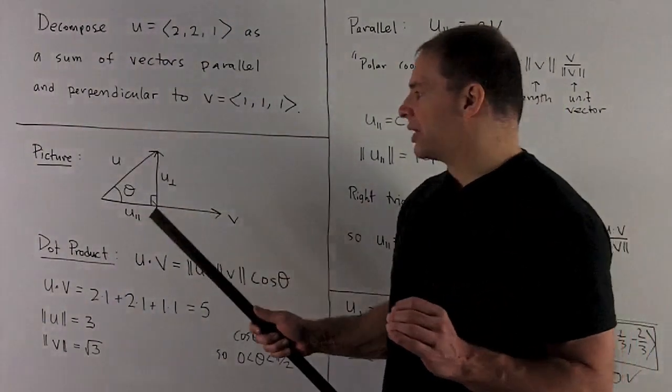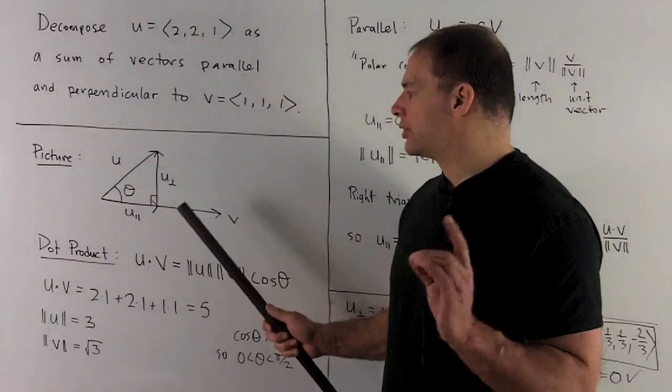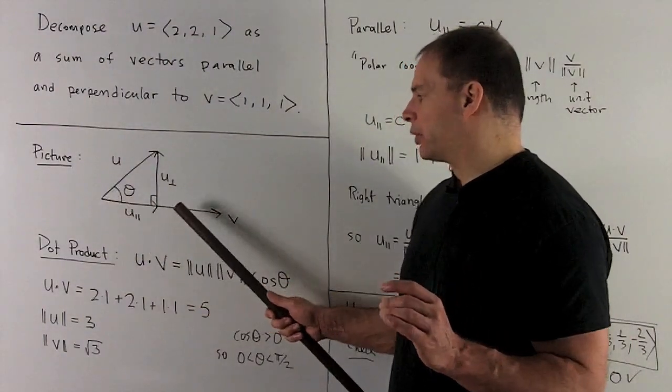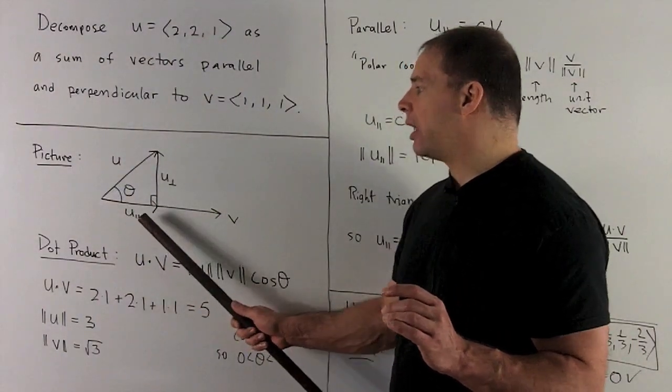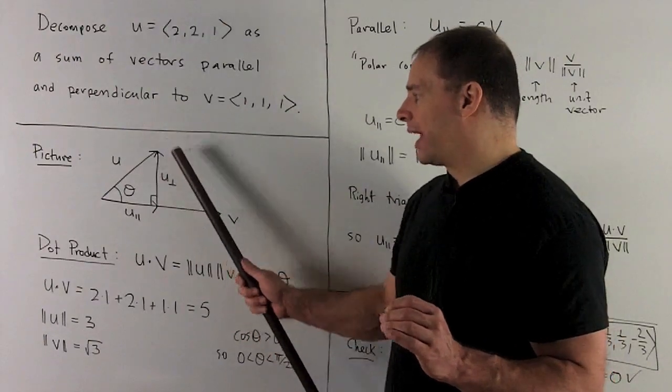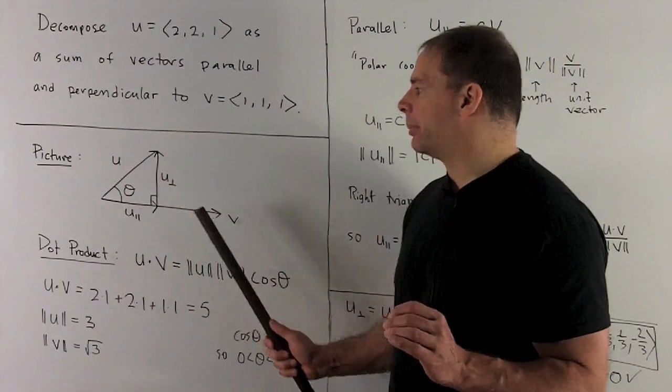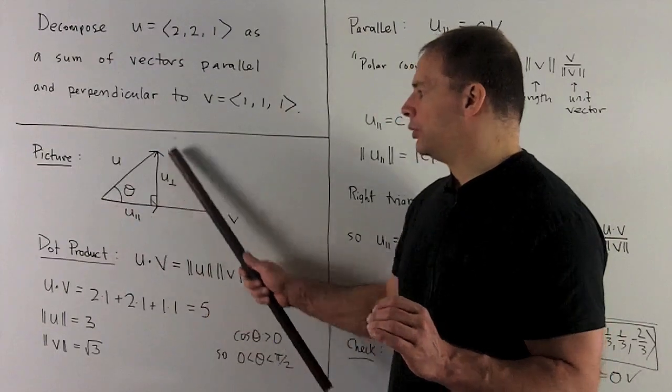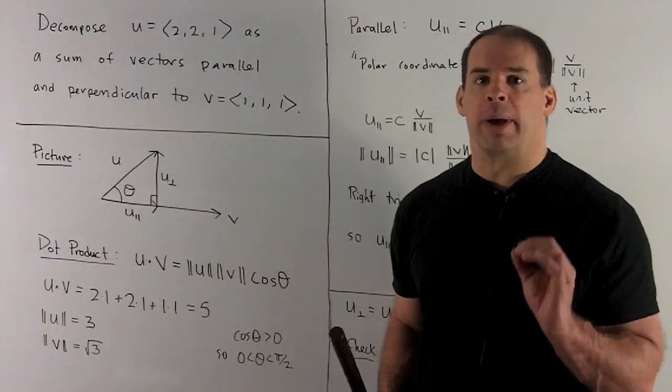I want to write u as a sum of two vectors so that one vector is in the same direction as v, that's u parallel. The other vector is at a right angle to v, that's u perp. If I add u parallel and u perp, doing heel-toe addition, I get u back.